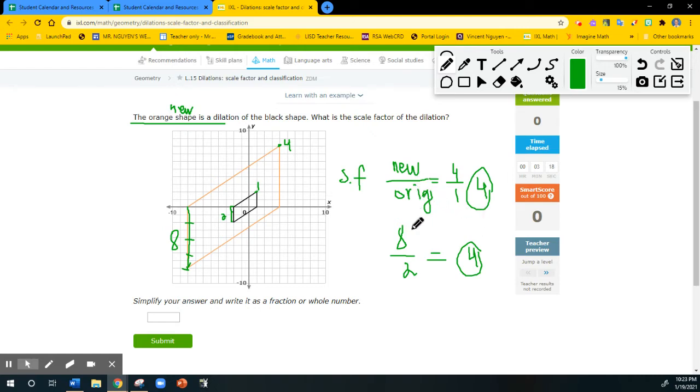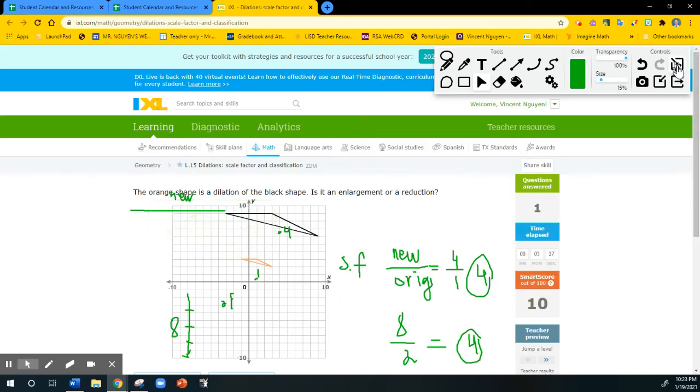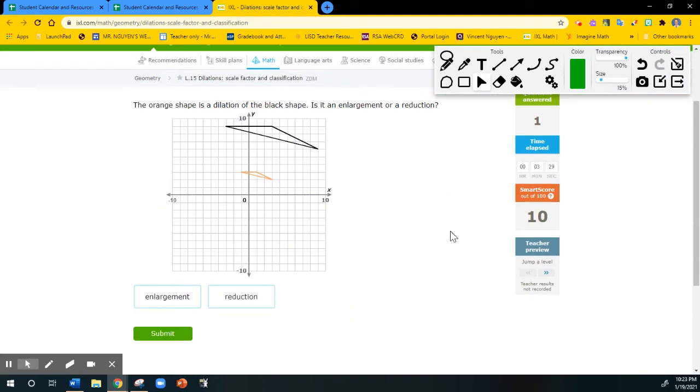You can do new divided by original. You will get the same scale factor. So in this case, we have 4 as our scale factor. Submit. So for the next problems, I'm going to get a little bit faster.